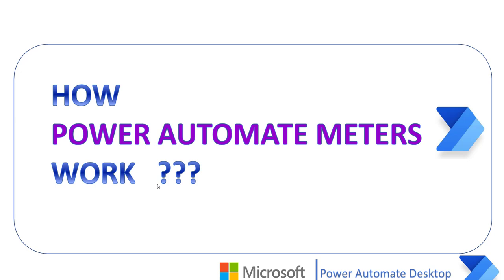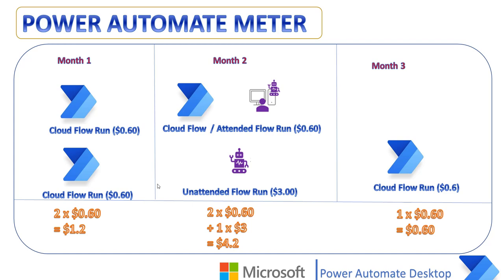Now I'll show you how the Power Automate meter works. When you choose the pay-as-you-go plan, usage of Power Automate services is billed to your Azure subscription using Azure meters. Power Automate enables users to build and run premium flows and pay based on the number of times those flows run, instead of purchasing standalone Power Automate licenses. A flow can run in the cloud or on the desktop with user interaction (attended) or without interaction (unattended mode).